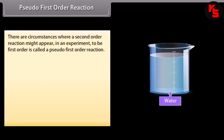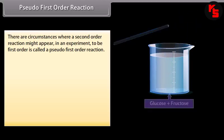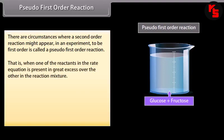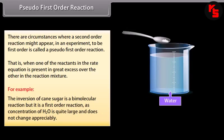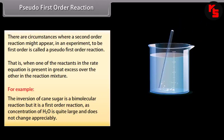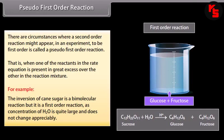There are circumstances where a second-order reaction might appear in an experiment to be first-order; this is called a pseudo-first-order reaction. This occurs when one of the reactants is present in great excess over the other. For example, the inversion of cane sugar is a bimolecular reaction, but it behaves as a first-order reaction because the concentration of H₂O is quite large and does not change appreciably.